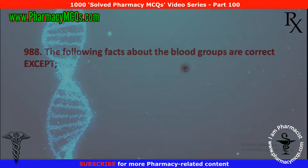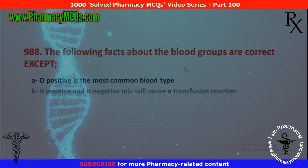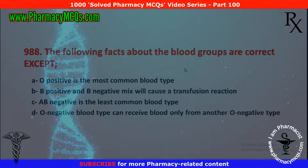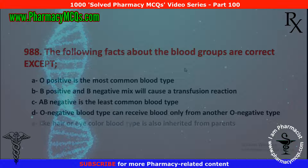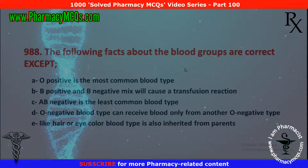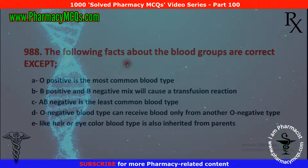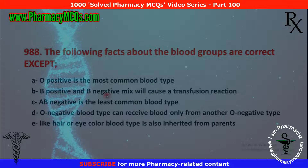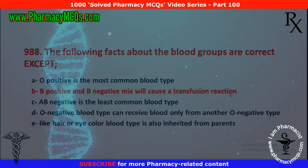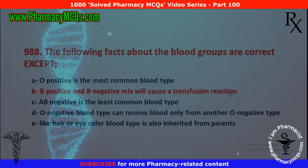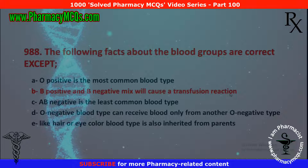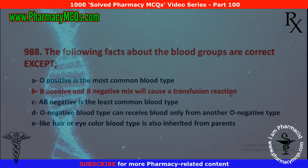Next MCQ: the following effects about blood groups are correct except: O positive is the most common blood type; B positive and B negative mix will cause a transfusion reaction; AB negative is the least common blood type; O negative blood type can receive blood only from another O negative type; blood type is also inherited from parents like eye color. The incorrect statement is that B positive and B negative mix will cause a transfusion reaction. A B positive individual can safely receive blood from B negative without any transfusion reaction.